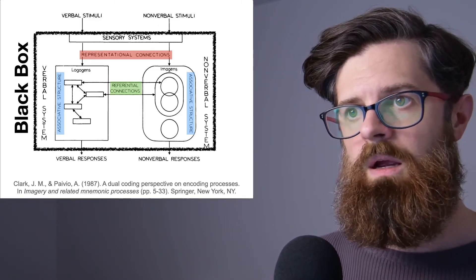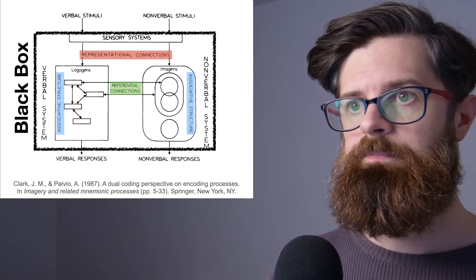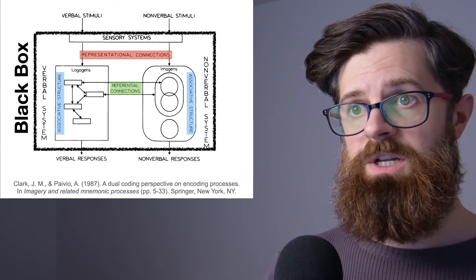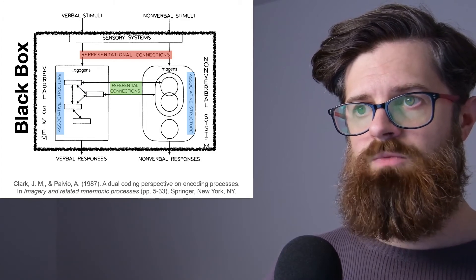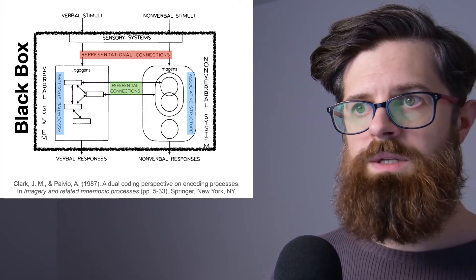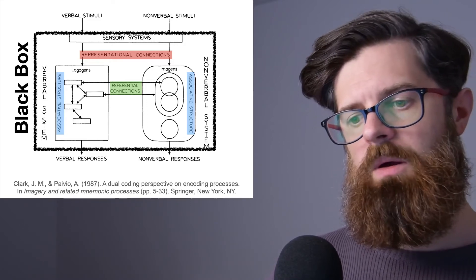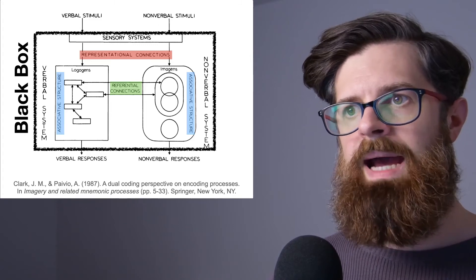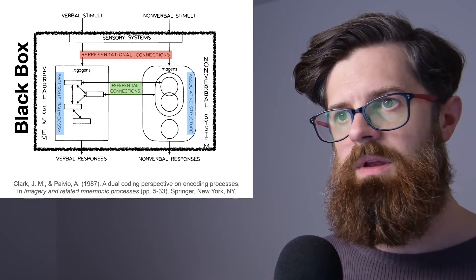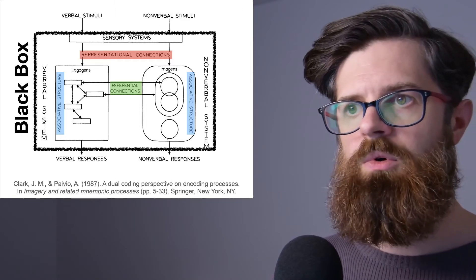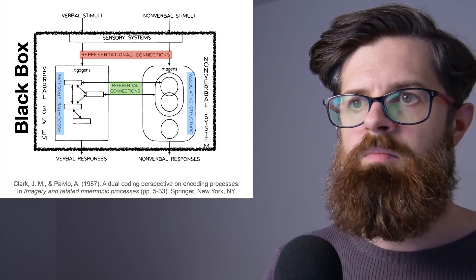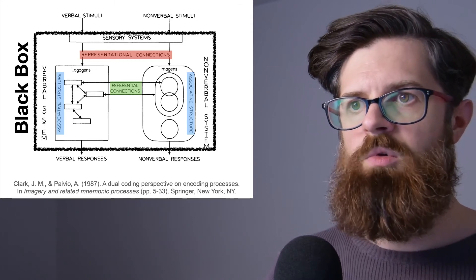Now in the blue we have this concept of an associative process. This represents the idea that when you're presented with a certain word like 'chair,' you then might have that word, that logogen, activated by the representational connections. But that in turn might activate similar things like the idea of a desk or sitting, for example. So it might activate similar, related, associated logogens. And you can imagine exactly the same thing might be happening over on the non-verbal image side of things.